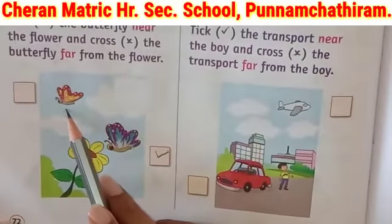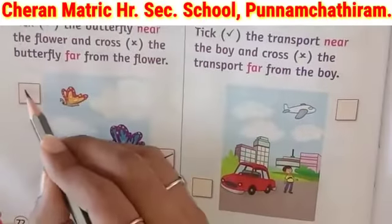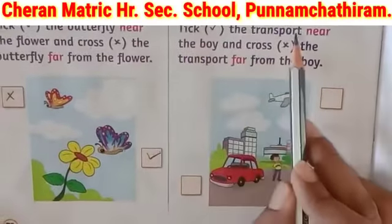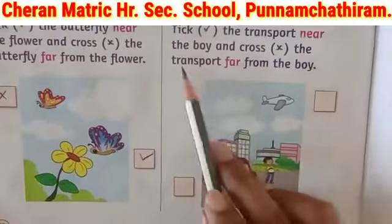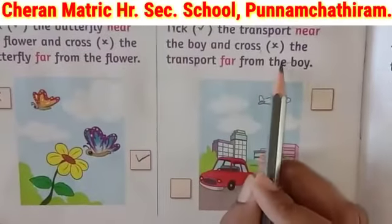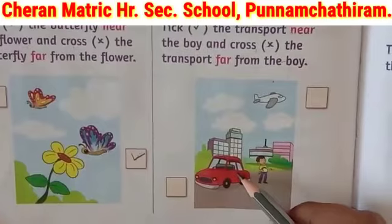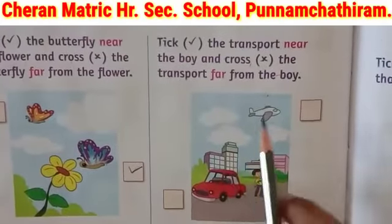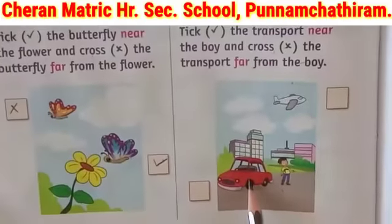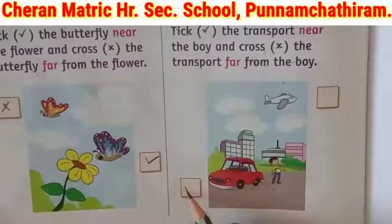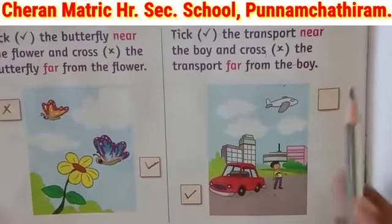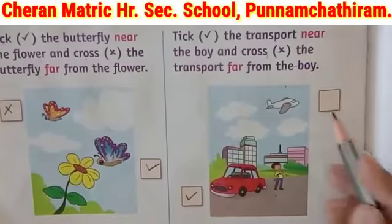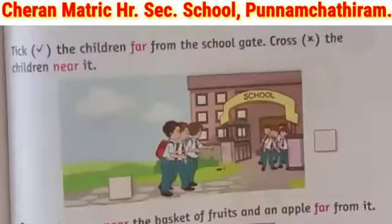See the next butterfly. Where is this? Yes, this butterfly is far from the flower, so we have to cross this box. Now tick the transport near the boy and cross the transport far from the boy. This is an airplane — this airplane is far from the boy, so we have to cross in the box.